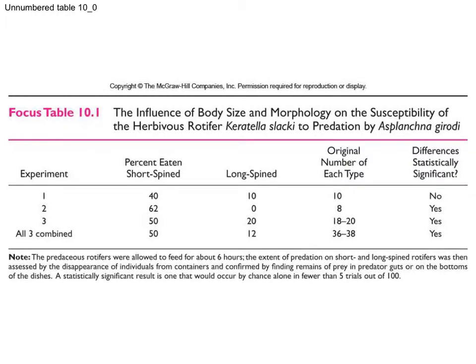This data addresses whether spine development actually provides protection against being eaten. Experiments using equal numbers of short-spine versus long-spine individuals show that in every case, predators ate more short-spined individuals than long-spined individuals. These differences were significant in all three cases except the first, probably due to small sample size.